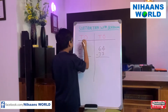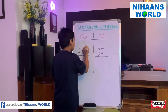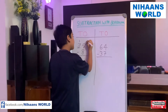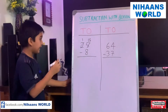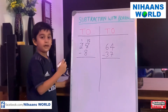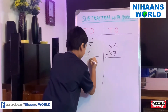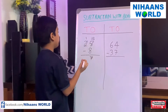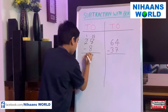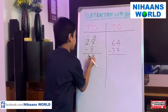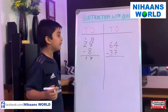2 becomes 1 and 5 becomes 15. So 15 minus 8 is equal to 7. We write 7 in this corner and 1 is left, so we directly write it down. Let's go to the next example.